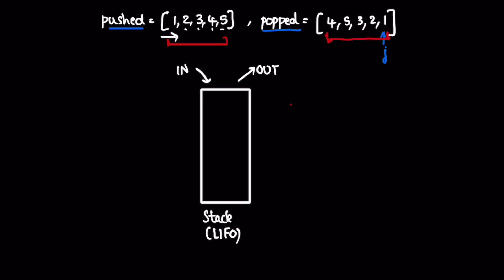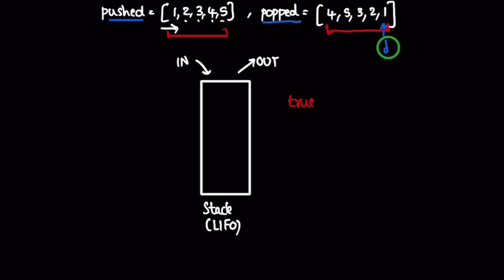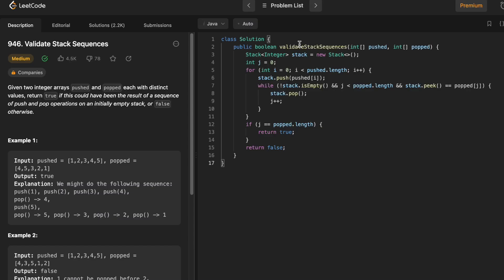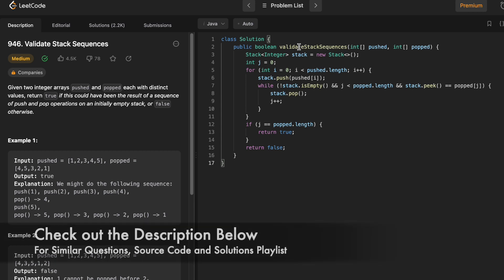Since we processed all elements in both the pushed and popped arrays, we can return true. We check if j has reached the end of the popped array — if yes, the output is true. If j has not reached the end after all elements are added, we return false. Now let's implement these steps in a Java program.